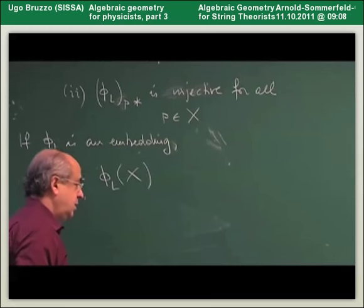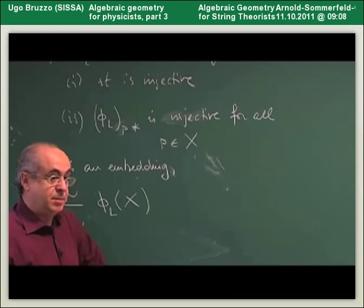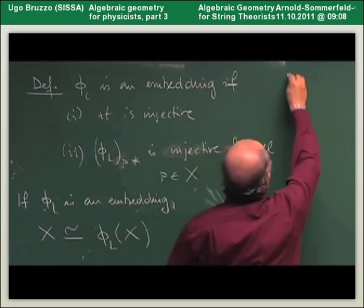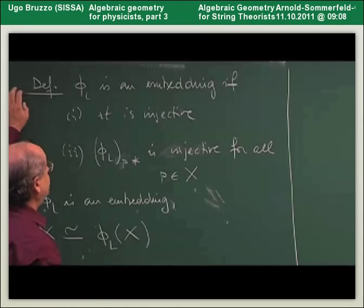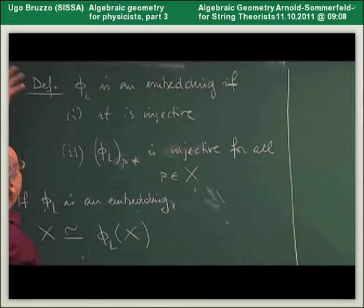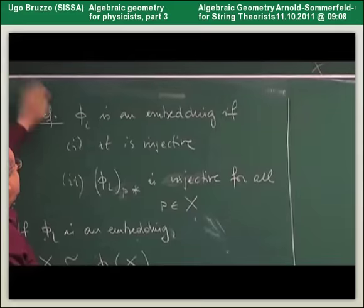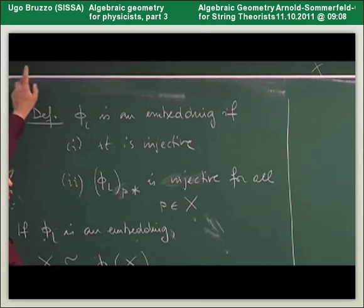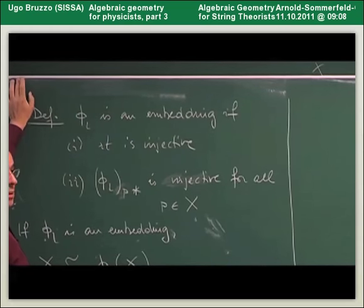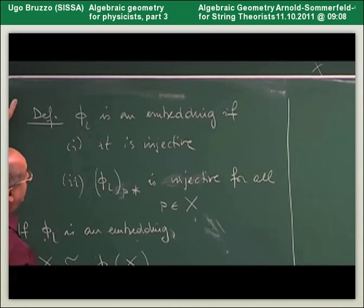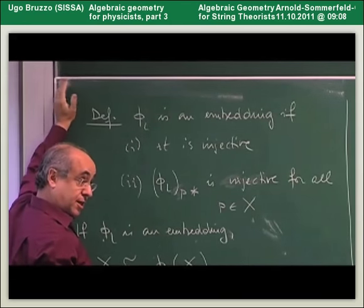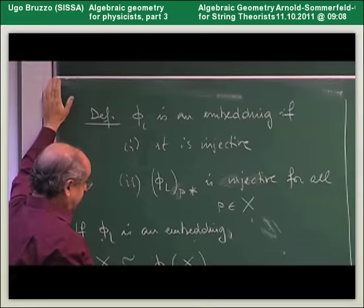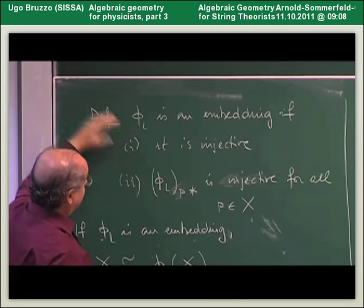We shall discuss in a moment why we like this to happen. But first, let's see under which conditions. The fact that this map is an embedding depends on the choice of the line bundle, and whether such an embedding exists at all. We would like to know, if we are given a line bundle, what we need to check to determine if it defines an embedding.